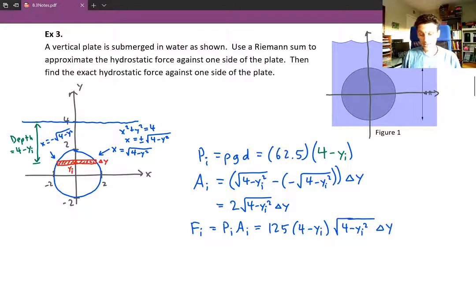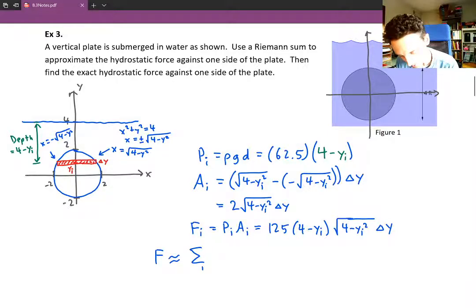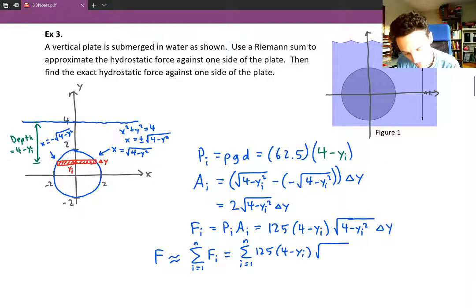So there's the force acting on just that strip. So the force in total can be approximated by the Riemann sum as i goes from 1 to n of the f sub i's, which is the sum as i goes from 1 to n of 125, 4 minus y sub i, times the square root of 4 minus y sub i squared, delta y. So there's the Riemann sum.